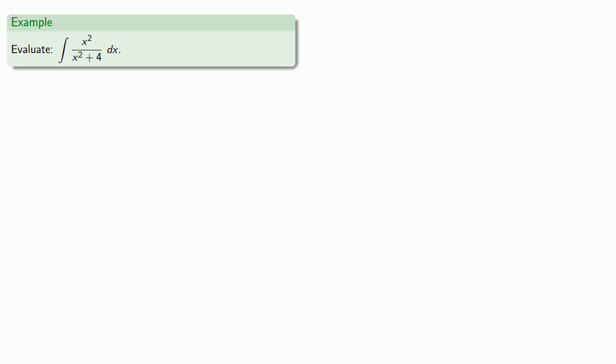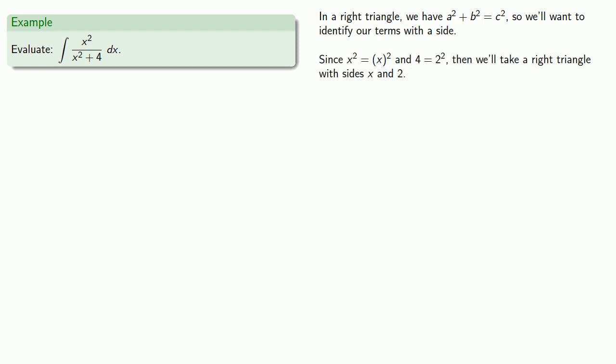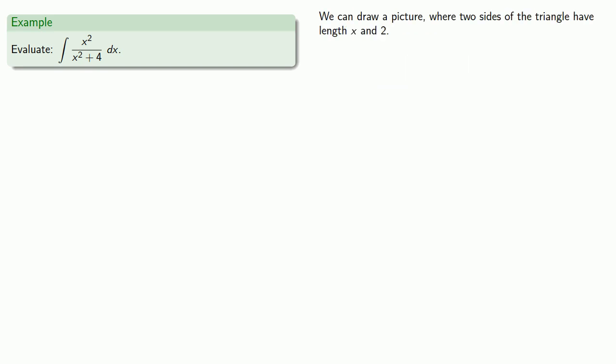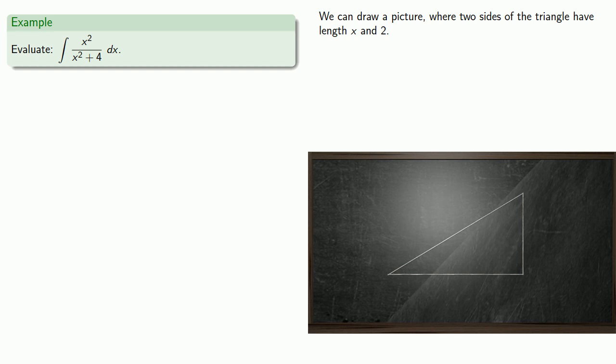The fundamental relationship we have in right triangles is the Pythagorean theorem. In a right triangle, we have a squared plus b squared equals c squared, where a, b, and c are the lengths of the sides. We want to identify our terms with the sides of a triangle. We note that x squared is x squared and 4 is 2 squared, so we'll take a right triangle with sides x and 2. We want one that naturally leads to the expression x squared plus 4.